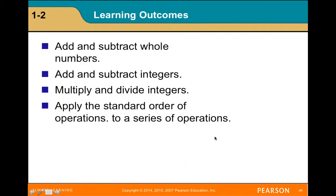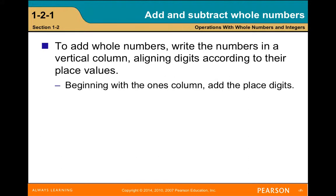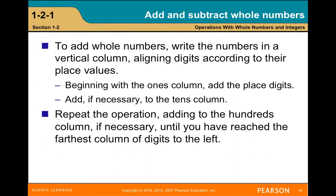The learning outcomes for section 1.2 are to add and subtract whole numbers, add and subtract integers, multiply and divide integers, and apply the standard order of operations to a series of operations. This follows the book closely. To add whole numbers, write the numbers in a vertical column aligning digits by place value, beginning with the ones column; add the digits and carry to the tens column if necessary, repeating through each column to the left.